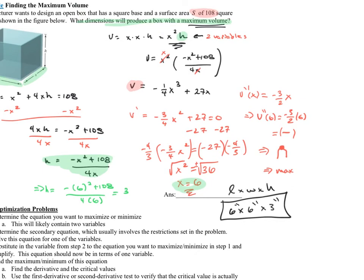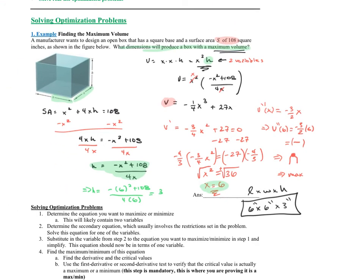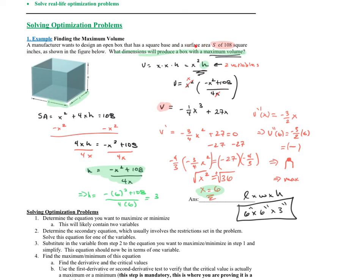Let's review what just happened. We read the problem and identified two equations: surface area and volume. We wrote V = x²h and wanted to maximize it, but it had two variables. So we used the surface area equation — the bottom plus the four sides — set it equal to 108, and solved for h. We substituted that into the volume equation, got volume in terms of one variable, found the derivative, confirmed it was a maximum, and then interpreted the answer. It's a long process, but it's a good application of finding maximums.